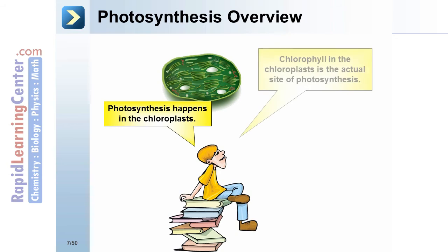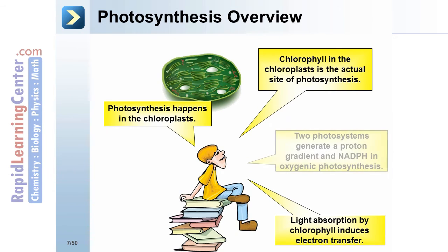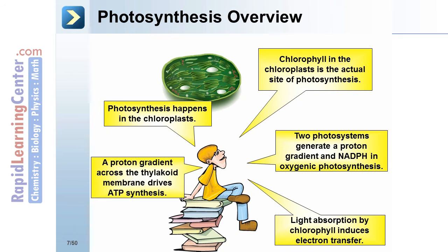Photosynthesis happens in the chloroplast. Chlorophyll in chloroplast is the actual site of photosynthesis. Light absorption by chlorophyll induces electron transfer. Two photosystems generate a proton gradient and NADPH in oxygenic photosynthesis. A proton gradient across the thylakoid membrane drives ATP synthesis.